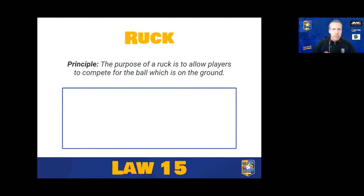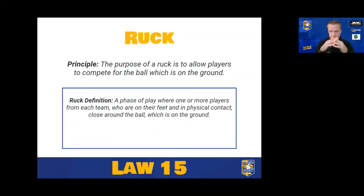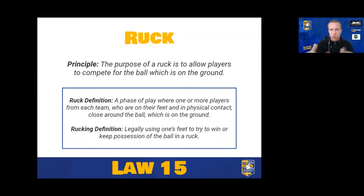Now for the ruck. The purpose of a ruck is to allow players to compete for the ball which is on the ground. A ruck is formed when players from each team are on their feet in physical contact and close around the ball, which is on the ground. Whereas you needed just one player to form offside lines at a tackle, you now need a player from each team in contact over the ball to form a ruck. Rucking — rarely referred to in law anymore — is defined as legally using your feet to try and win possession of the ball. You must use your feet safely, as foul play laws prohibit stamping or illegal use of feet.